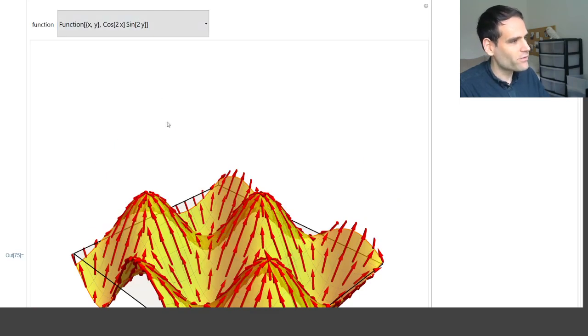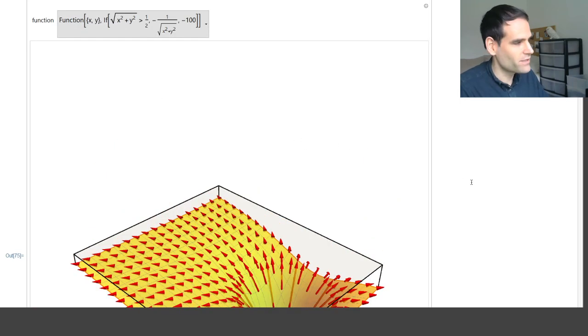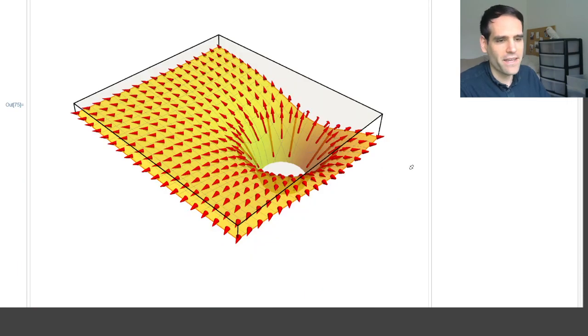I have added the gravitational potential which is equal to minus 1 divided by r. You can see this yellow surface is now the potential of a point mass, going to zero at infinity and to minus infinity at the origin because it's minus 1 divided by r.